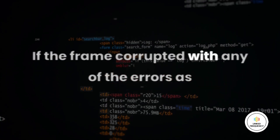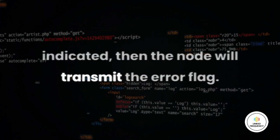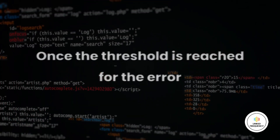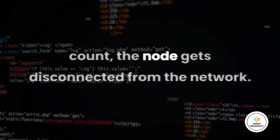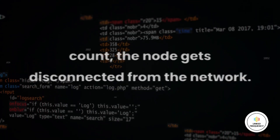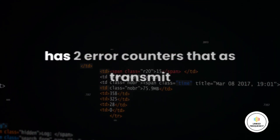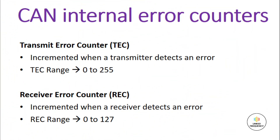If the frame is corrupted with any of the indicated errors, then the node will transmit the error flag. Once the threshold is reached for the error count, the node gets disconnected from the network. To decide this particular threshold, every node has two error counters — the transmit error counter and the receive error counter — which keep track of errors generated.